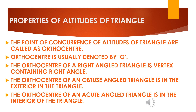Now we will see properties of altitudes of a triangle. As we already discussed, altitudes are concurrent lines. The point of concurrence of altitudes of a triangle is called the orthocentre. The orthocentre of a right angle triangle is the vertex containing the right angle — that means the point where the right angle is formed — and that is going to be the point of concurrence of altitudes.